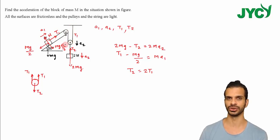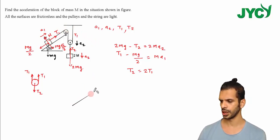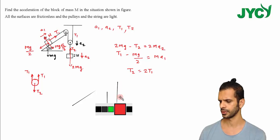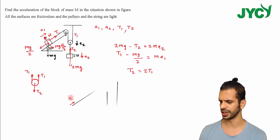For this string, I'll write the constraint equation. One string, one constraint equation. This string has three parts. This point has acceleration A1. This pulley is fixed, so this end is also fixed. This pulley is fixed, so this end is also fixed.